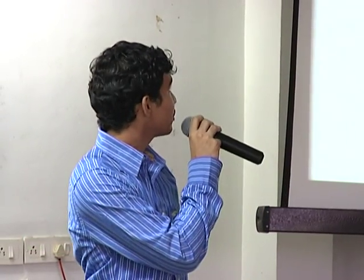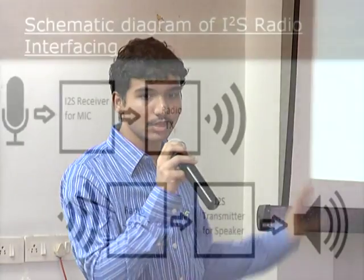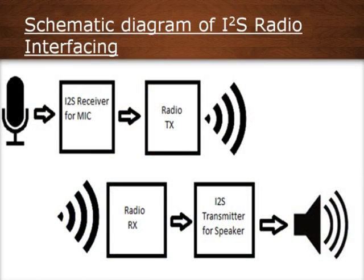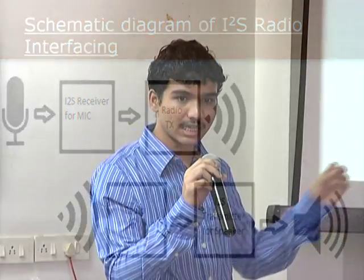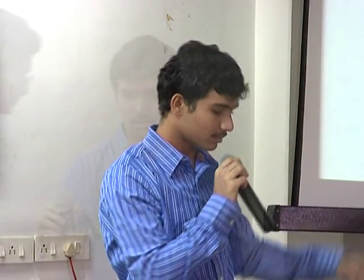This is a schematic diagram of I²S radio interfacing, showing what exactly happens in the device. Using the mic we send audio input, which is sampled and sent to the I²S receiver for the mic. In the I²S receiver the data is compressed and sent to the radio for transmission. At the receiver module another radio receives these waves and sends them to the I²S transmitter for the speaker, where the previously compressed data is expanded and given to the speaker.